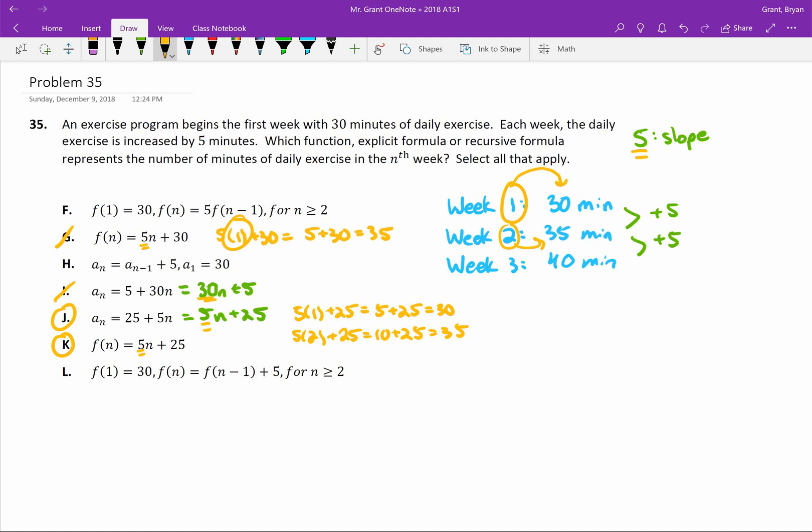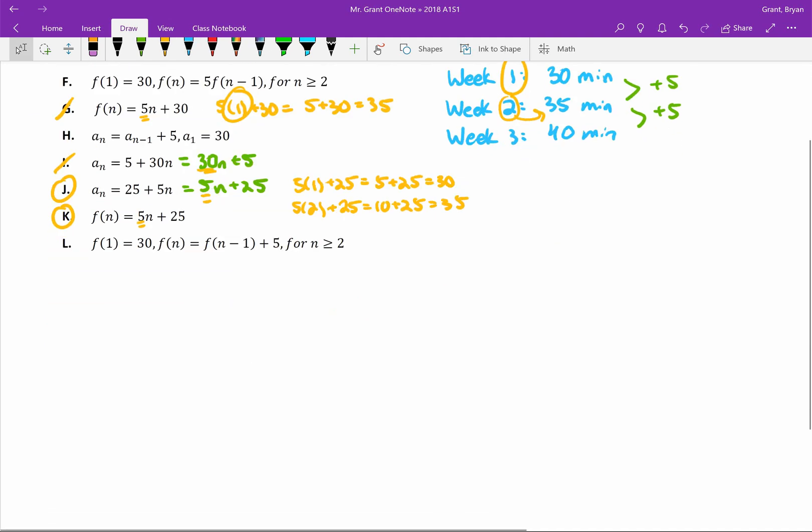Now we have F, H, and L to narrow down. F, H, and L are all written in that recursive format. We did recursive formulas in our topic 3. Just a quick reminder, our recursive formula has a bunch of pieces to it. It's usually saying if you want to find some term, the current term, it's going to be equal to the previous value plus something, plus a number.